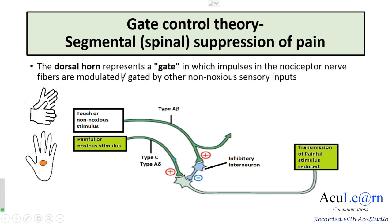The dorsal horn represents a gate in which impulses in the nociceptive nerve fibers are modulated or gated by other non-noxious sensory inputs. This is called the gate control theory of pain modulation, and the suppression of pain occurs by stimulation of the touch fibers at the spinal level — called the segmental suppression of pain.